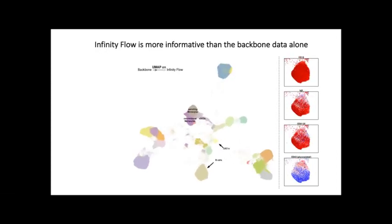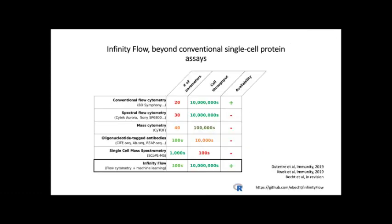To summarize the strengths: with Infinity Flow you can look at hundreds of parameters in tandem — the only limits are antibody quality and time to run plates. You can easily do this analysis across tens of millions of cells, and the availability of the underlying technology and reagents is high. We've made a strong step toward leveraging the strengths of protein-based flow cytometry approaches while minimizing their limitations.